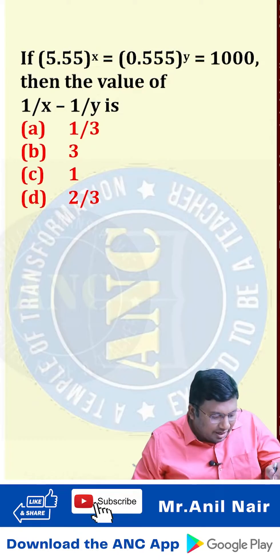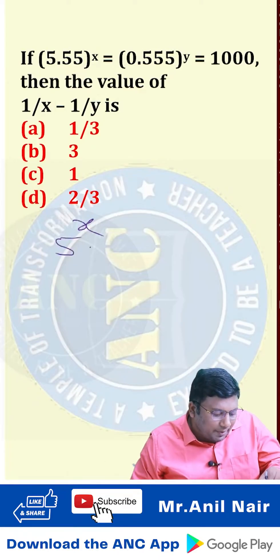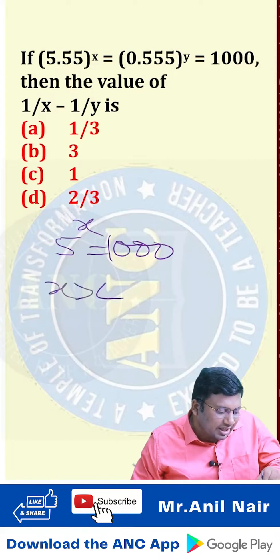How I solve this question is, if I take approximately 5 power x equivalent to 1000, that means x is greater than 4.